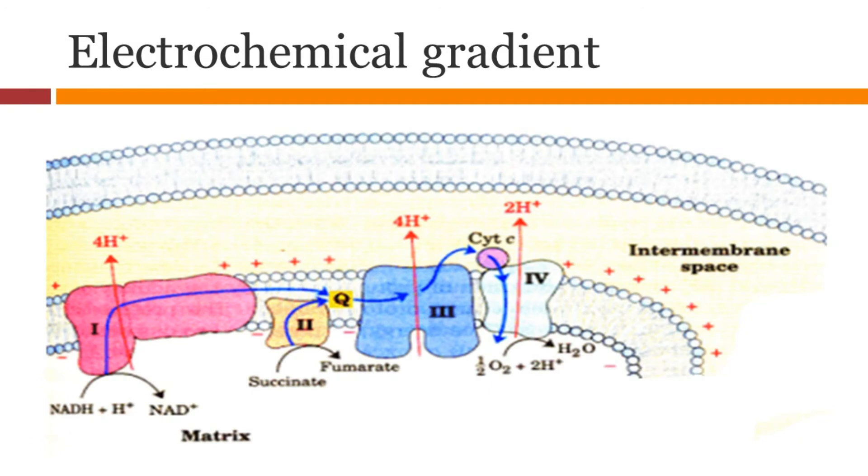Complex 1, 3, and 4 use the free energy of the electron transport chain to pump protons into the intermembrane space. This creates the electrochemical gradient with more positive charge in the intermembrane space. We can now use this gradient to synthesize ATP.